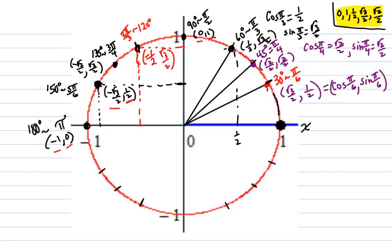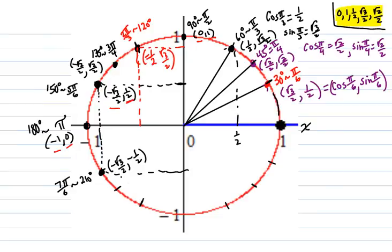Next, π/6 past that — 6π/6, 7π/6 — coterminal to 210 degrees, which is 30 degrees past 180. The coordinates: it's the long x and it's negative, so negative √3/2. And the y is negative 1/2. So the cosine of 7π/6 is negative √3/2, and the sine of 7π/6 is negative 1/2.